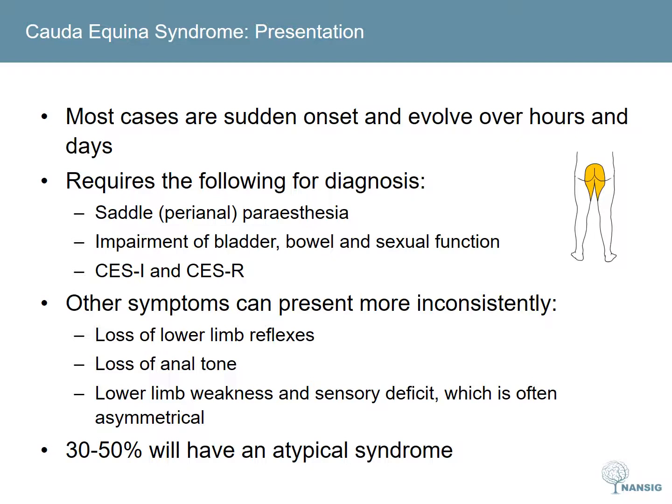If unilateral or bilateral leg weakness, plus anal paraesthesia and urinary symptoms are present, then there is a positive predictive value of over 95%. It is important to note that compression of the cauda equina will cause a lower motor neuron picture — i.e. hypotonia, hyporeflexia, etc. This is not the case for compression of the cervical spine, where compression will cause upper motor neuron signs and symptoms in the affected limbs.